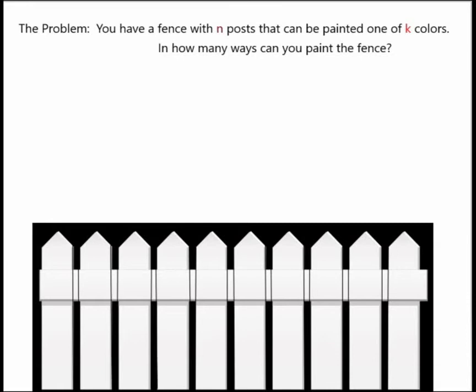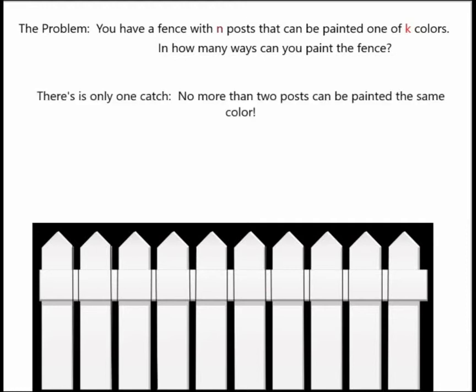The problem is: you have a fence with N posts that can be painted with one of K colors. How many ways can you paint the fence? There's only one catch — no more than two posts can be painted the same color.